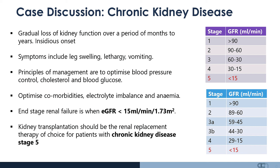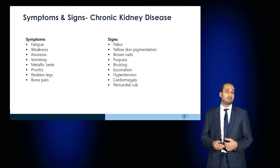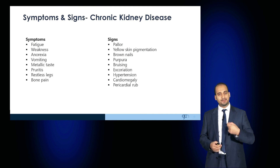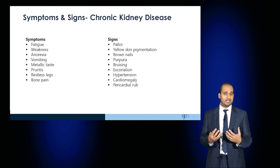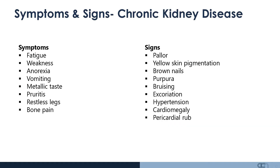You may be asked about what symptoms patients will experience as they develop advanced kidney disease. Symptoms include fatigue, weakness, anorexia, vomiting, and metallic taste from waste product buildup, pruritus as a result of urea, bone pain, and restless legs. Signs as a consequence of renal disease would include pallor due to anemia, yellow discoloration of the skin, brown nails, purpura and bruising, excoriation. The patient may develop hypertension and potentially cardiomegaly and a pericardial rub.